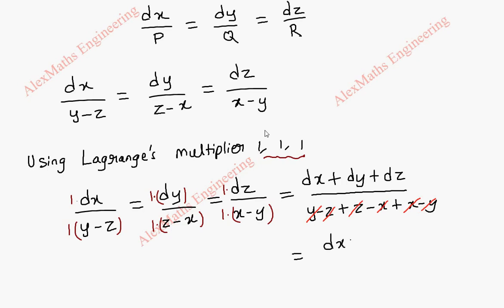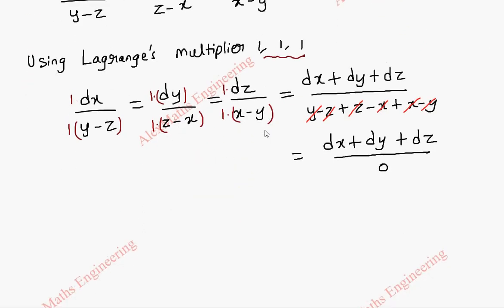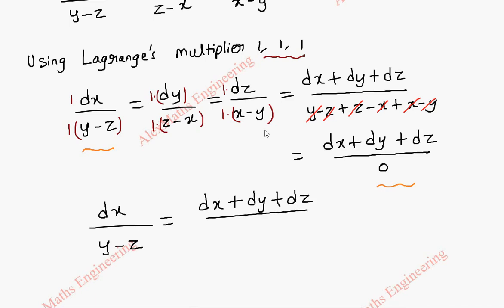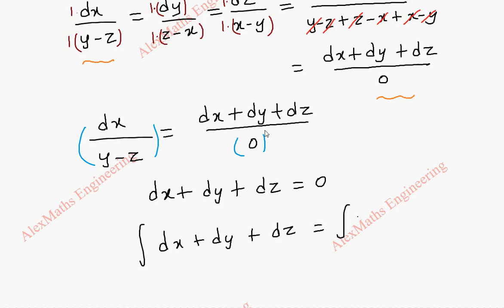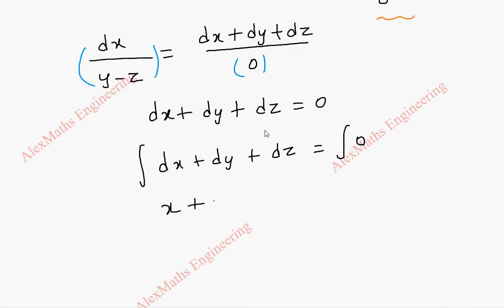So we have dx plus dy plus dz whole divided by 0. Taking any two terms — this and the last term — we have dx by y minus z equal to dx plus dy plus dz whole divided by 0. When we cross multiply, the entire term is multiplied with 0, so we get dx plus dy plus dz equal to 0. Integrating both sides, this becomes x plus y plus z equal to constant c1.